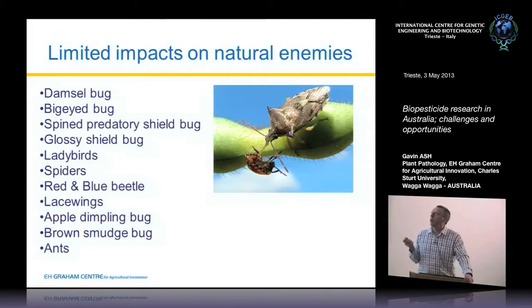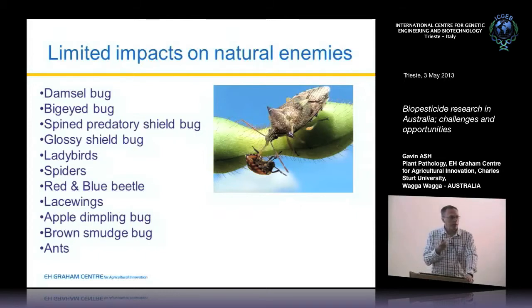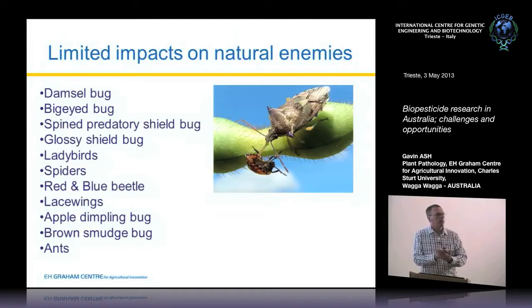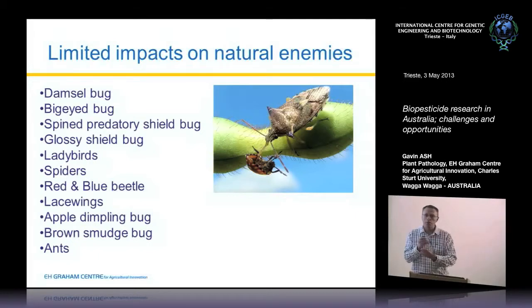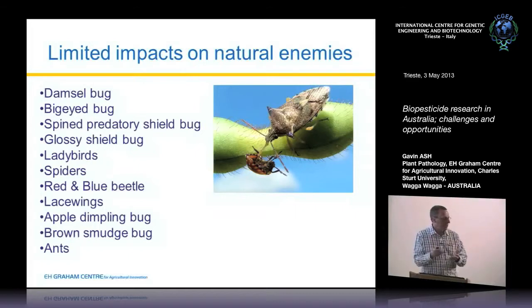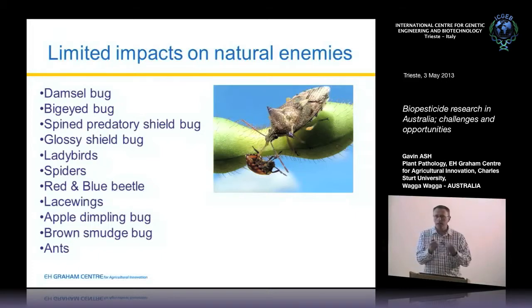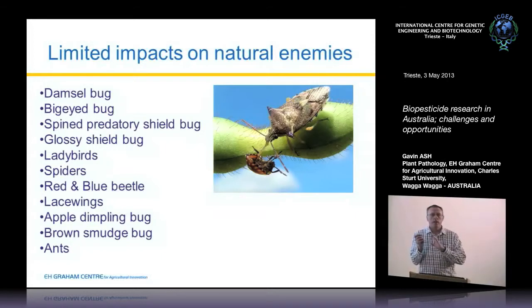They don't have an impact on natural enemies — that's another really important thing. If we take a natural enemy and put it in a petri dish with the fungus, it will kill it. But in the field, because of the ecology of these organisms, they don't come into contact with it. Natural enemies are actually repulsed by insects infected with Metarhizium — they can sense it and don't go near them, even at very early stages, producing a range of chemicals the natural enemies can detect. So we get very little death of natural enemies in the field.